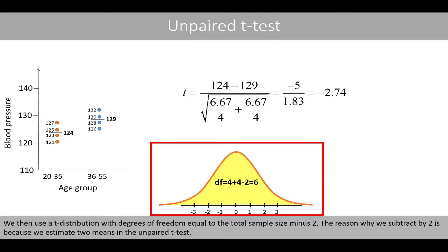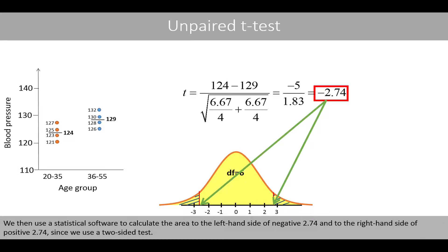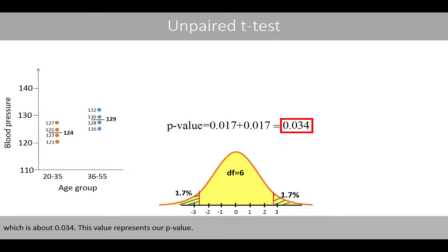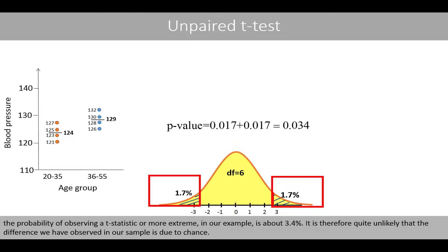We then use a t-distribution with degrees of freedom equal to the total sample size minus 2. The reason we subtract by 2 is because we estimate two means in the unpaired t-test. Our degrees of freedom is therefore 4 plus 4 minus 2, which is 6. We then use statistical software to calculate the area through the left-hand side of negative 2.74 and through the right-hand side of positive 2.74, since we use a two-sided test. The corresponding p-value is therefore the sum of the areas of these two tails, which is about 0.034. If the null hypothesis is true, the probability of observing a t-statistic as extreme or more extreme is about 3.4%.